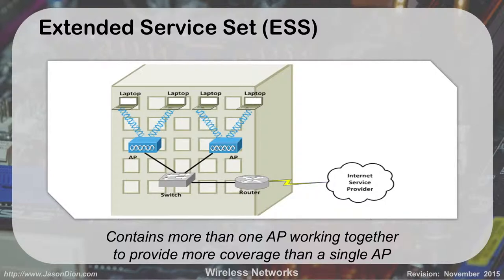The Extended Service Set (ESS), on the other hand, is what we use here at the college. This building is too big for a single access point, so we have multiple access points. Some laptops connect to one access point, some connect to another, then they tie back into the switch and work together to provide continuous coverage throughout the building. To you it looks like you're on the same wireless network, but really multiple access points bring you into that network.